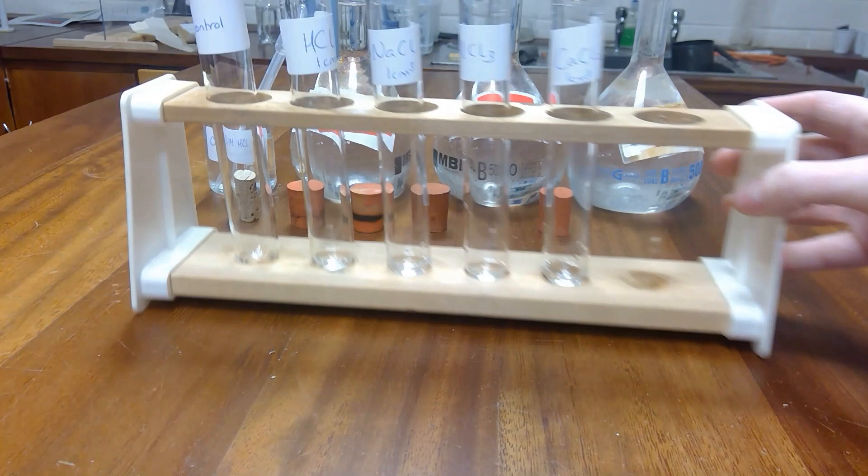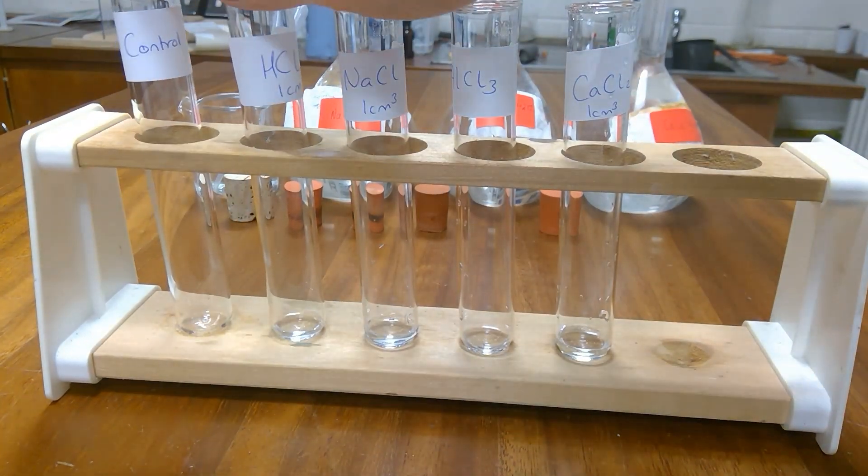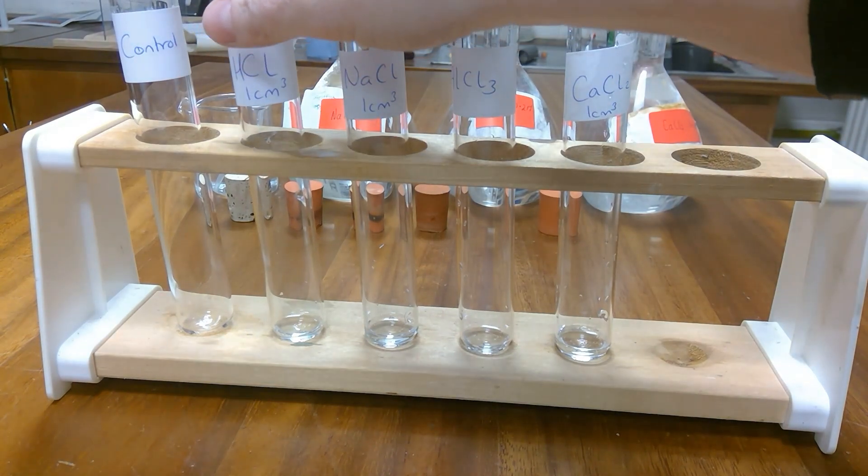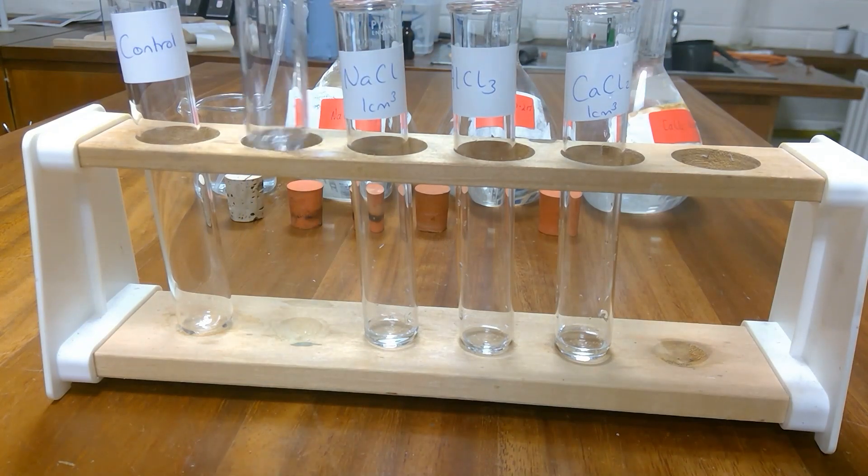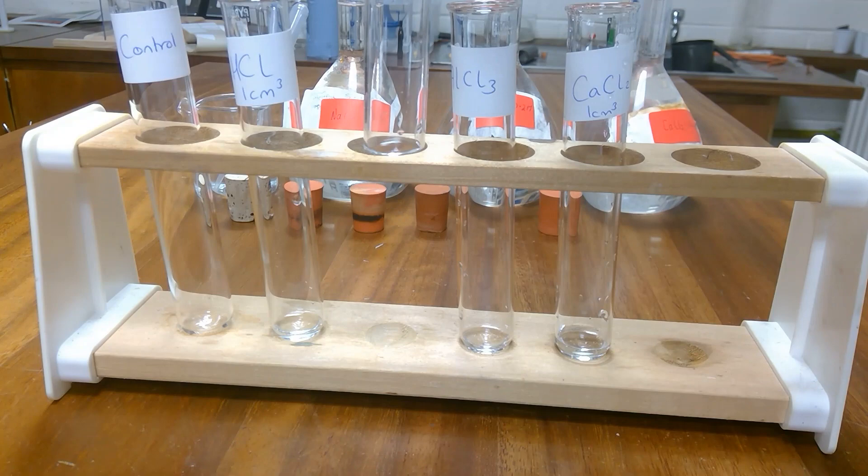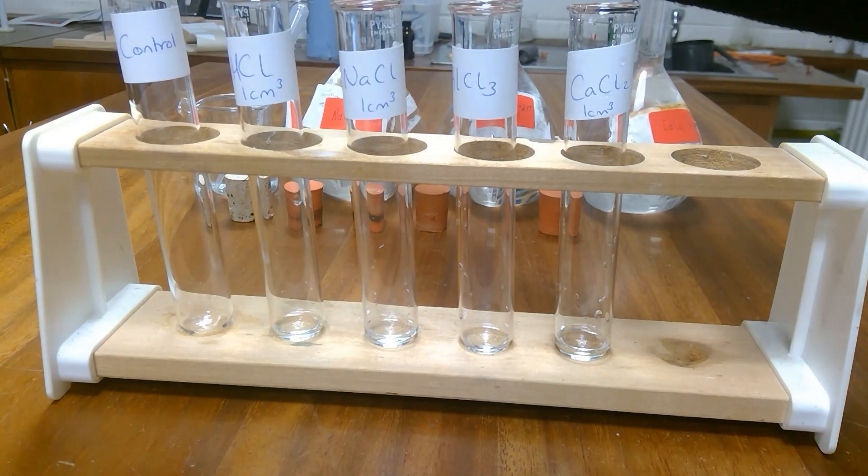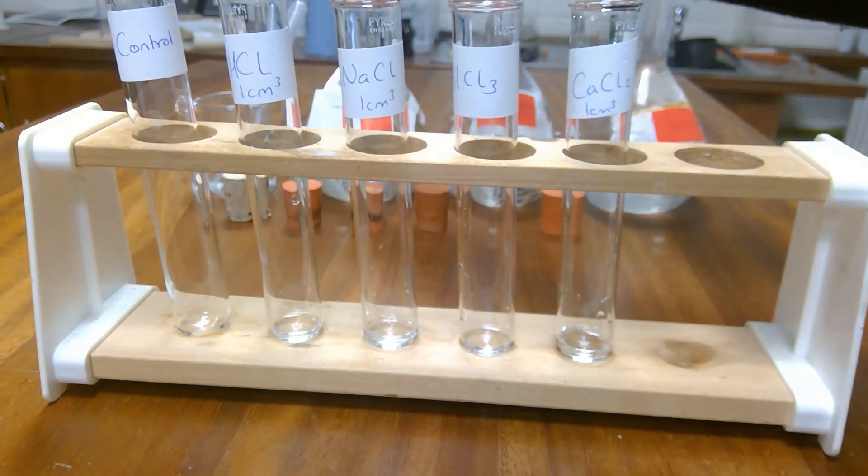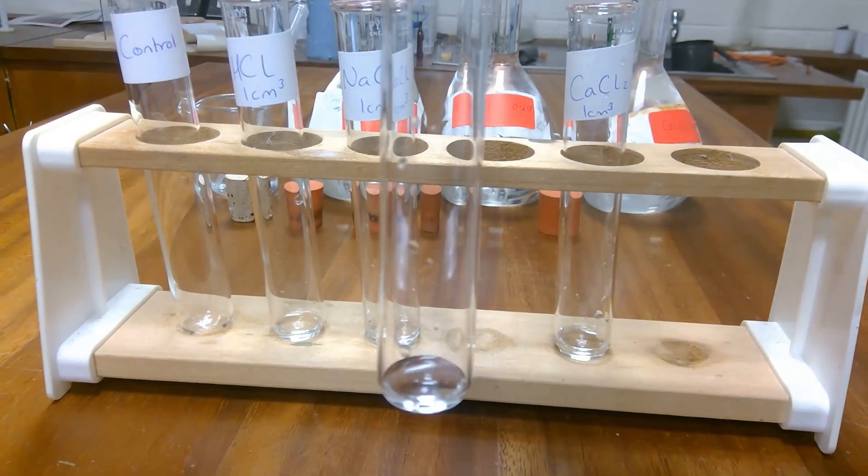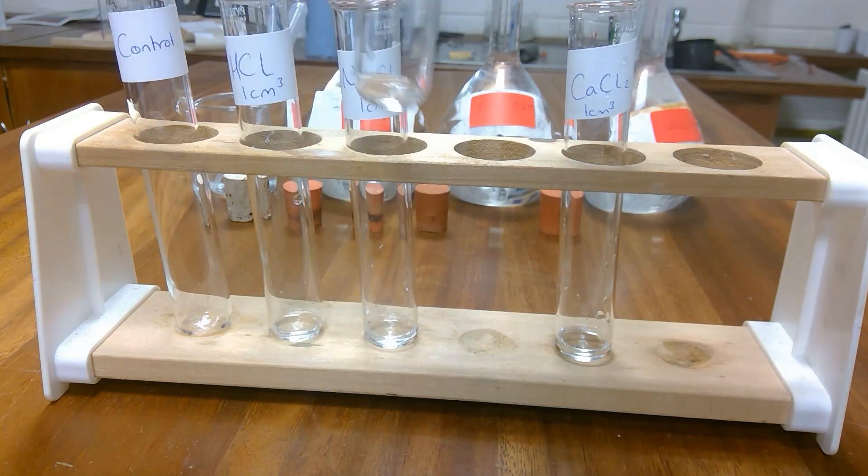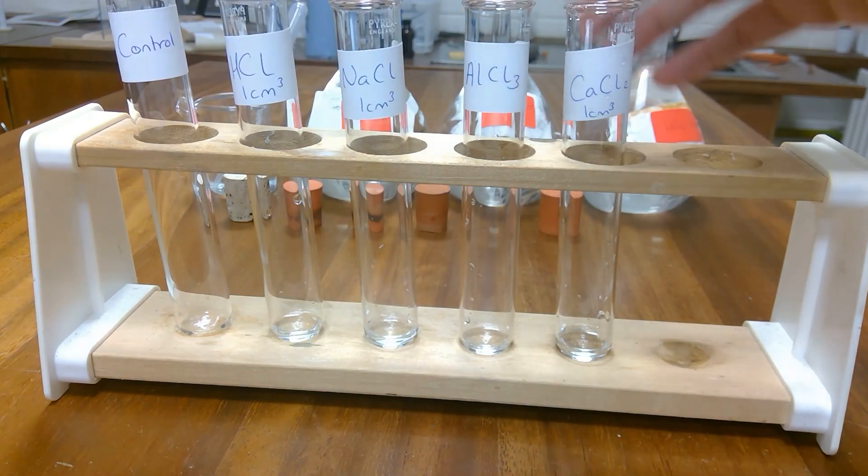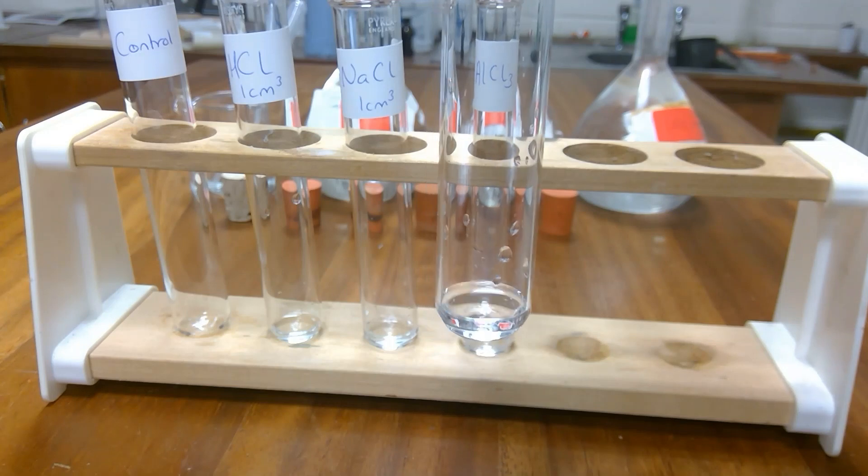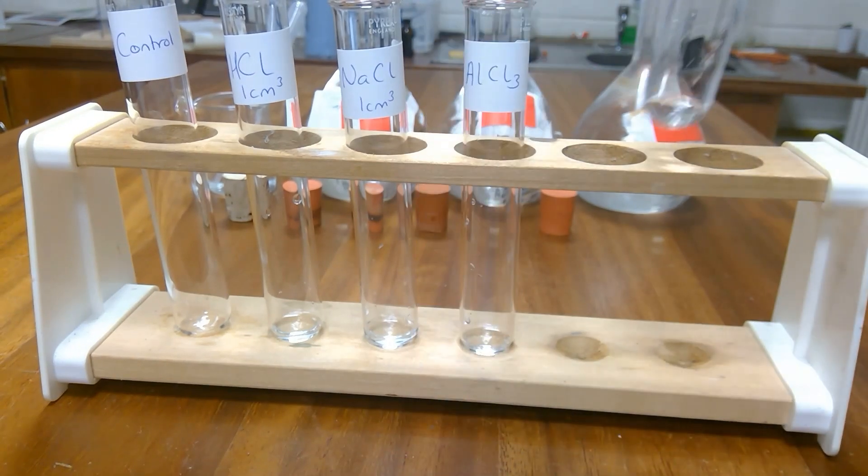So before we use the chemicals, I just want to show my test tubes here. I have my control. I'm going to be using 1 centimetre cubed of 0.1 molar hydrochloric acid. And I have that already in the test tube and measured out. I'm going to use 1 centimetre cubed of sodium chloride. And the sodium chloride is 0.1 molar. And then I'm going to use aluminium chloride, which is AlCl3. And again, I have the 1 centimetre cubed and I have my test tube labelled. And then I have 1 centimetre cubed of calcium chloride. And the calcium chloride is 0.5 molar. And again, I have 1 centimetre cubed of that already in the test tube.